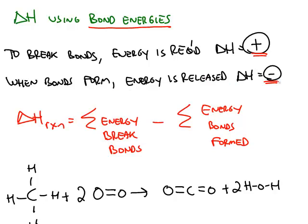That's an exothermic process. So you can estimate delta H for a reaction by calculating the input of energy that it takes to break all the bonds, subtracting the release of energy when the new bonds are formed.